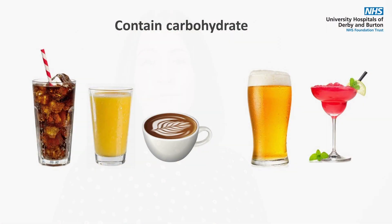Certain vegetables however contain more starch than others and so these can increase our blood sugar. These include all kinds of potatoes, cassava and plantain. Drinks such as lattes, full sugar pop and fruit juice contain carbohydrate, as do some alcoholic drinks such as beer and sugary cocktails.